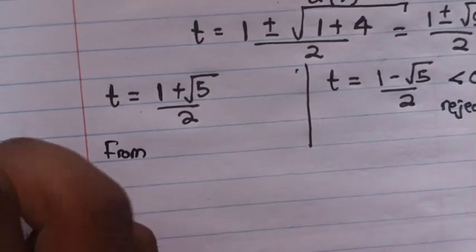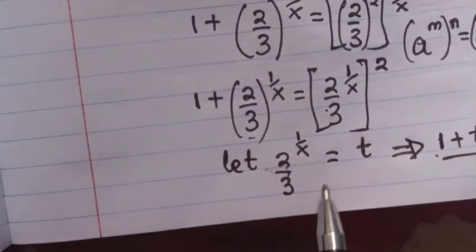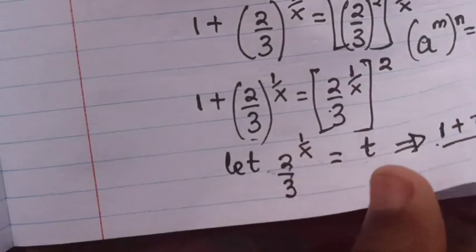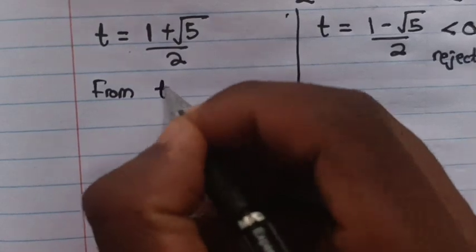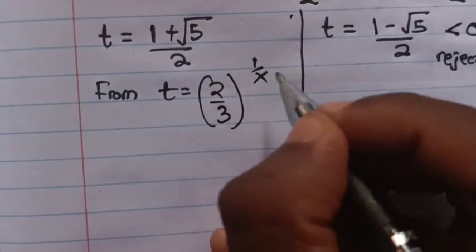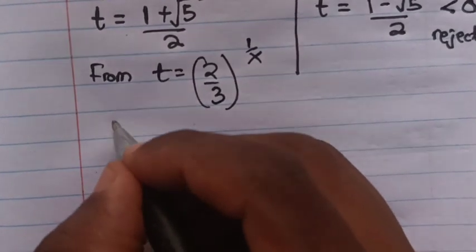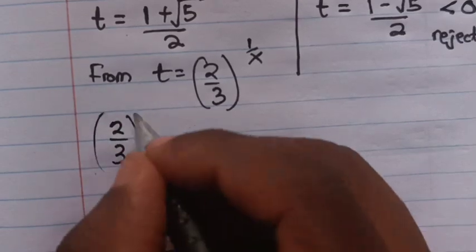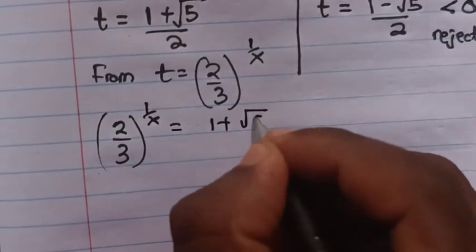From the value of t — remember we let t equal (2/3)^(1/x) — we substitute here: (2/3)^(1/x) equals (1 plus square root of 5) divided by 2.